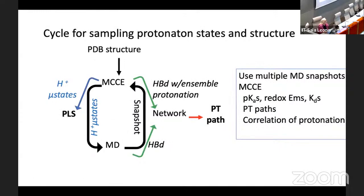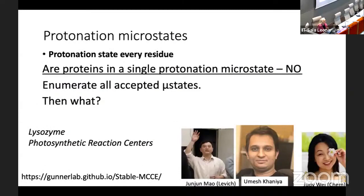The question I want to start with is: how many protonation states is a protein in? Is there a single protonation state? You might think: okay, Asp and Glu are ionized, His — I'm not sure — Tyr and Cys are neutral. So most people might say, other than the histidines, sure, one microstate. But that's not been our experience.